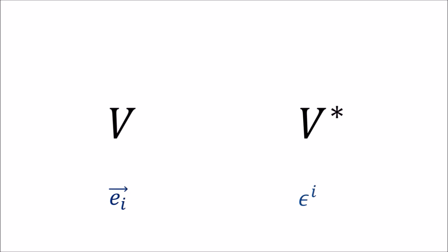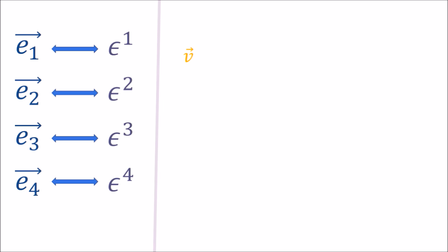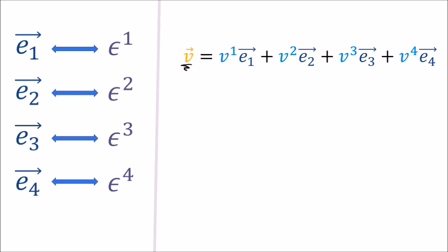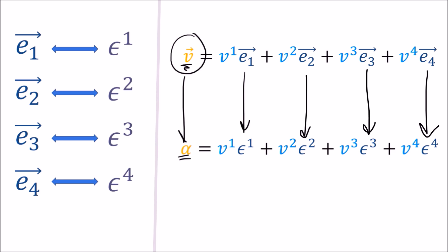One way we could create a correspondence would be to take the basis vector E_i in V and pair it up with the basis co-vector Epsilon_i in V star. So right off the bat we're able to assign co-vector partners for all the basis vectors. This works in two dimensions, but also in any dimension. For any arbitrary vector V, we can expand it as a linear combination of basis vectors, turn the basis vectors into basis co-vectors, and that co-vector is V's partner in V star.